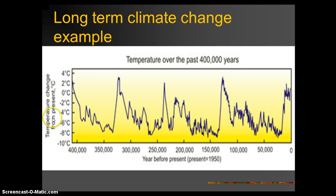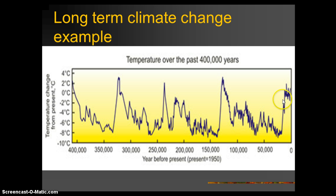In the past 400,000 years, temperatures have never dropped more than 10 degrees Celsius or risen more than about 4 degrees Celsius from the baseline. You can see several peaks and valleys representing cycles of global warming and global cooling. The drops represent ice ages — periods when much of the Earth was covered in ice — and the peaks represent global warming situations. These dramatic differences in temperature give us the pattern of global warming and global cooling across Earth's history.